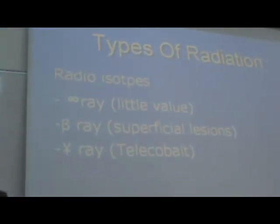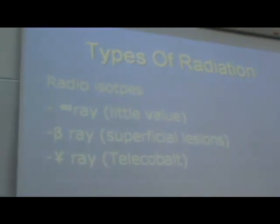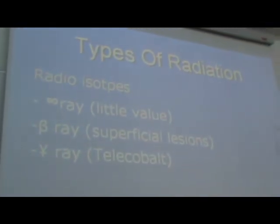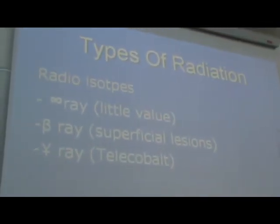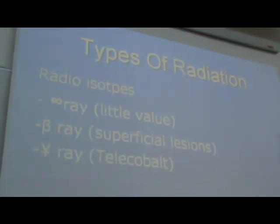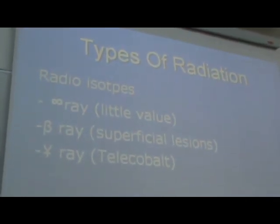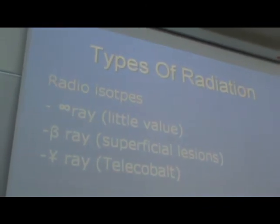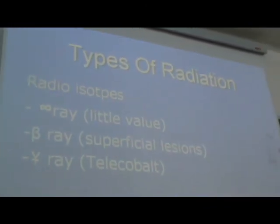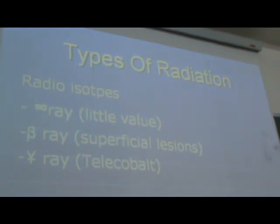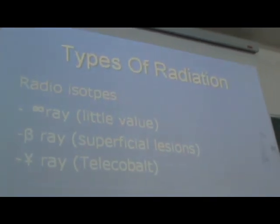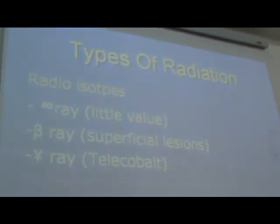Another source of radiation is radioisotopes — radioactive elements or materials that emit alpha, beta, and gamma radiation. For clinical use, we use gamma rays, and the common source is cobalt. The machine generating this is called a cobalt machine.